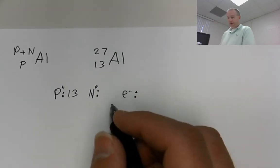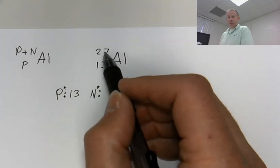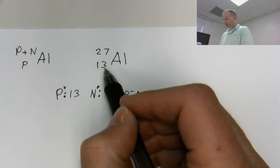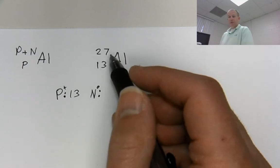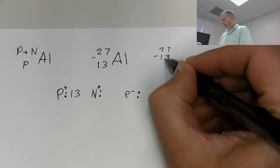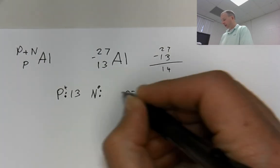Now, the neutrons. If we've established that the top number is the mass number, that's protons plus neutrons, the bottom number is already the protons. That's just a subtraction problem. It's already set up for you. So you just do 27 minus 13, and you end up with 14 neutrons.